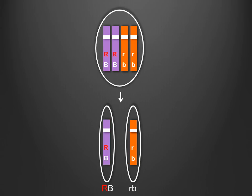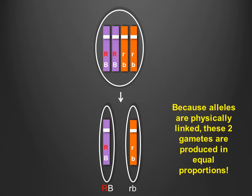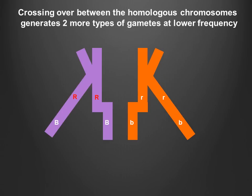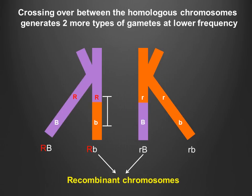Now, because the genes are linked, the B and R dominant alleles are essentially stuck together, while the recessive b and r alleles are also stuck together. As a result, most of the gametes produced by the heterozygote parent are either BR or br, and these gametes are produced at relatively equal frequencies. However, during meiosis, a process called crossing over, or recombination, which occurs at relatively low frequencies, allows for the generation of recombinant offspring. Crossing over allows for the formation of two types of recombinant gametes: one with R and little b, and the other with little r and big B.